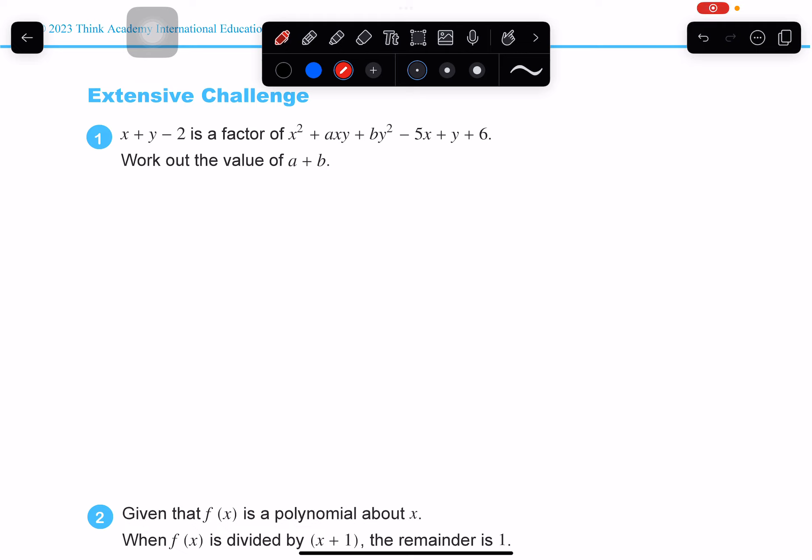All we need to do is to utilize the factor theorem for it, such that we are going to have x adding y take away 2 being 0, and that's going to be a factor of this expression. So in that case, we can definitely solve x adding y equals 2.